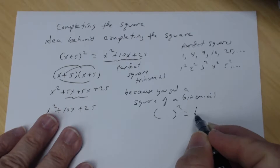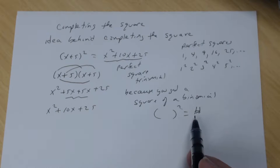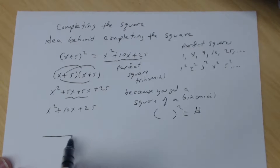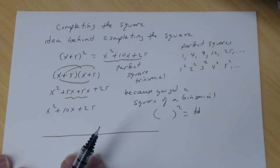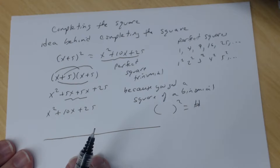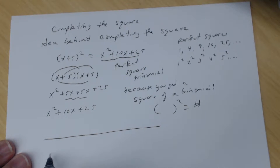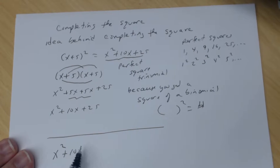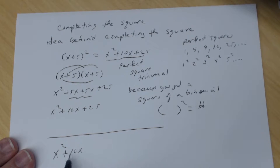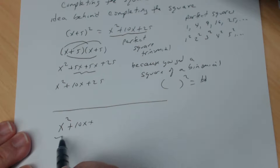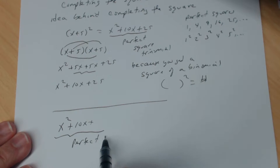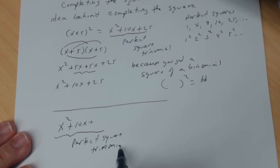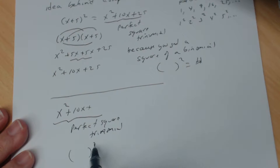It's going to look like something squared equals a number — some algebraic expression equals some real number. When you start solving quadratic equations using completing the square, on one side you'll have your variable terms, and the question is: what number do I need to add to these two terms so that the trinomial becomes a perfect square trinomial — meaning I can write it as something squared?